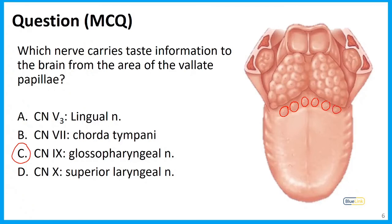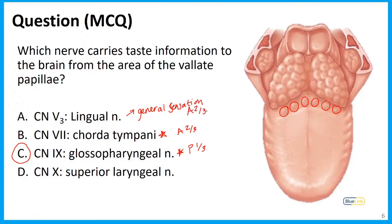Taste information is carried by both glossopharyngeal nerve and chorda tympani — chorda tympani for the anterior two-thirds, and glossopharyngeal for the posterior one-third. The lingual nerve carries general sensation from the anterior two-thirds. General sensation from the posterior one-third also goes with glossopharyngeal nerve. The superior laryngeal nerve provides overlap in the general sensation of the posterior one-third.